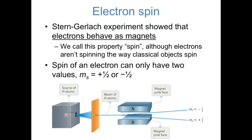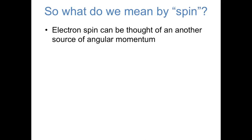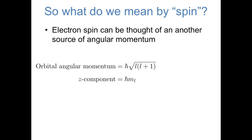When we hear the word spin, it's tempting to think of the electrons as spinning around like a top, but really the electrons aren't spinning the way we classically think of spin. The spin that an electron has can be thought of as just another source of angular momentum. We already know that the spatial part of atomic orbitals has angular momentum associated with it. The orbital angular momentum has a magnitude of h-bar times the square root of l times l plus 1, and one component of the angular momentum — the z component — has a magnitude of h-bar times m sub l.